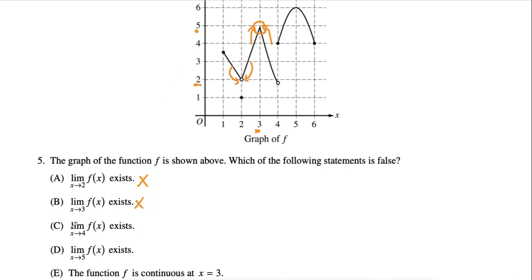C: the limit of f(x) as x approaches 4 exists. If we go to where x equals 4 and we see what the y value is, if we approach this point from the left, we'll get a point